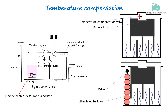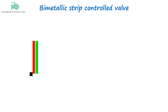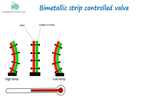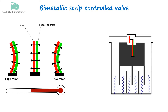The key mechanisms involved are altering the flow to the vaporizing chamber using bimetallic strips or ether-filled bellows, and by supplying heat to the vaporizer. Bimetallic strips are composed of two different metals with distinct coefficients of thermal expansion bonded together, meaning they expand and contract at different lengths with changing temperature. This differing expansion rate causes the strip to bend in either direction. The bending movement is used to adjust the position of a needle valve, which controls the flow of fresh gas into the vaporizing chamber versus the bypass channel.